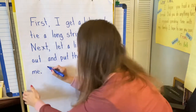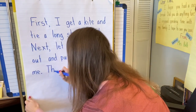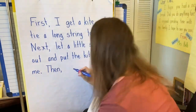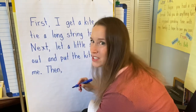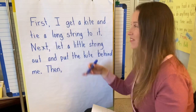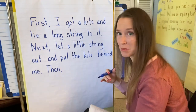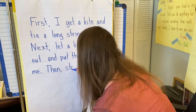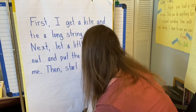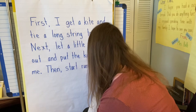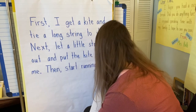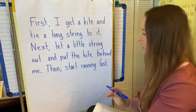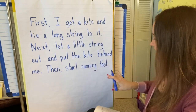So then what do I do? Then, comma. Okay, I got the kite behind me. Then I start running fast. I could say 'then I start running fast' or I can just say 'then start running fast' because I'm giving directions — it's almost like I'm giving commands to people, so I don't always have to say 'I.' Then start running fast. Period.